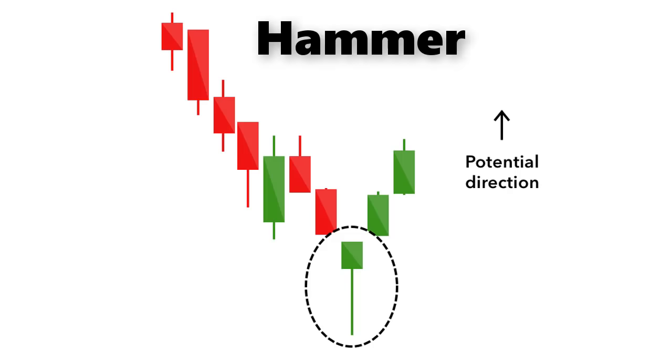Hammer. The hammer candlestick pattern is formed of a short body with a long lower wick and is found at the bottom of a downward trend. A hammer shows that although there were selling pressures during the day, ultimately a strong buying pressure drove the price back up. The color of the body can vary, but green hammers indicate a stronger bull market than red hammers.